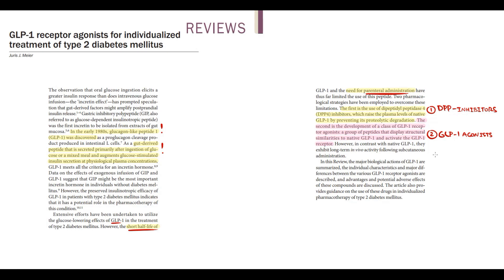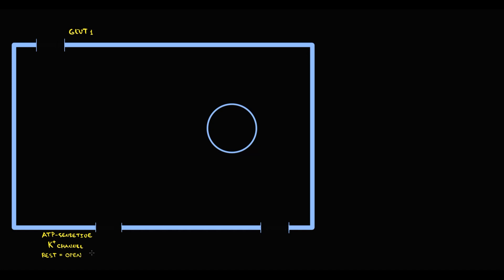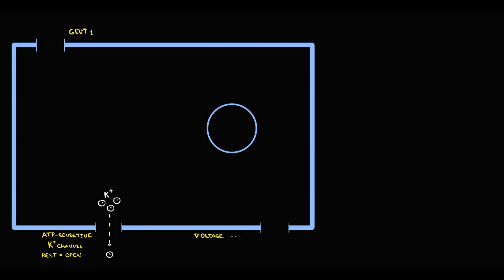And to explain it we have to recall physiology of pancreatic beta cells. So here we have a pancreatic beta cell. Beta cells have a GLP-1 transporter. This transporter provides transportation of glucose into the cell. Also they have ATP-sensitive potassium channels. And we have to know that in the rest state potassium channels are opened. So because potassium is an intracellular ion, the concentration of potassium inside the cell is much higher than the concentration of potassium outside the cell. While potassium channels are opened, potassium constantly leaves the cell.